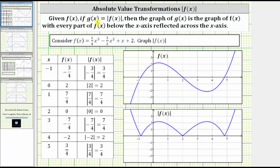Given f of x, if g of x equals the absolute value of f of x, then the graph of g of x is the graph of f of x with every part of f of x below the x-axis reflected across the x-axis.